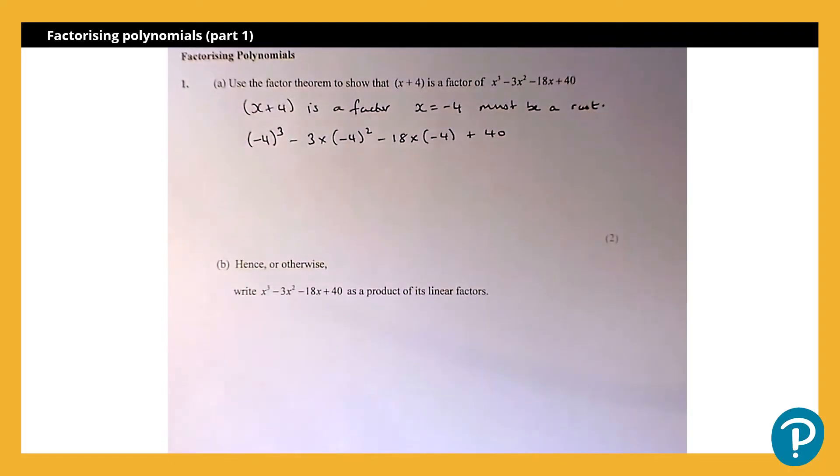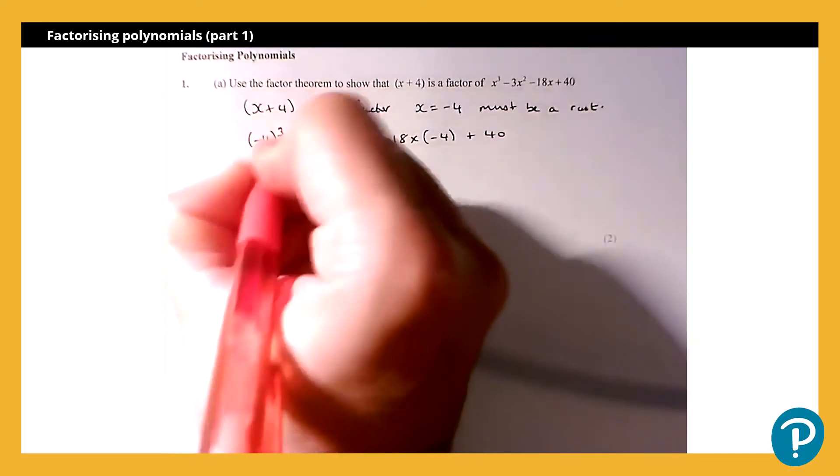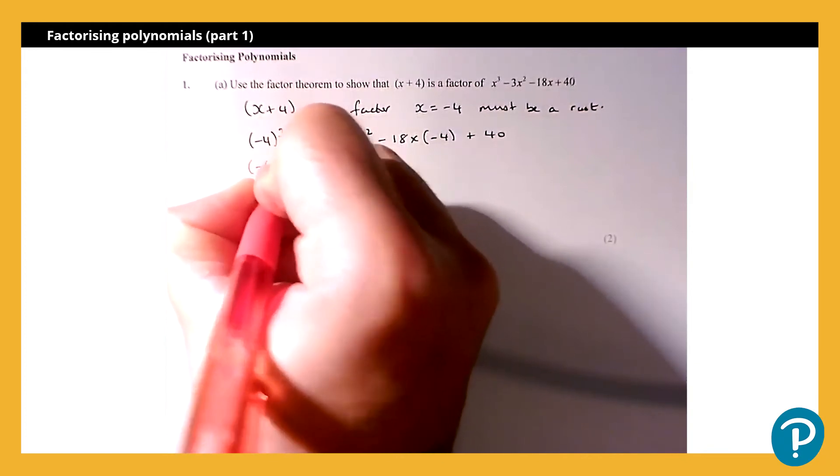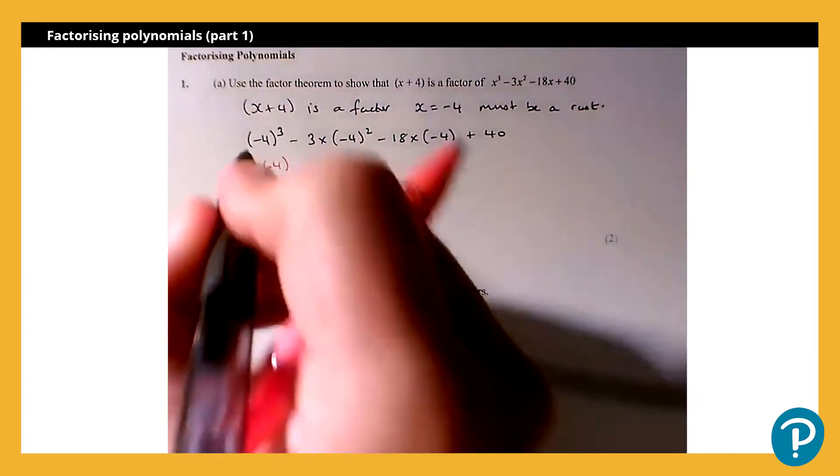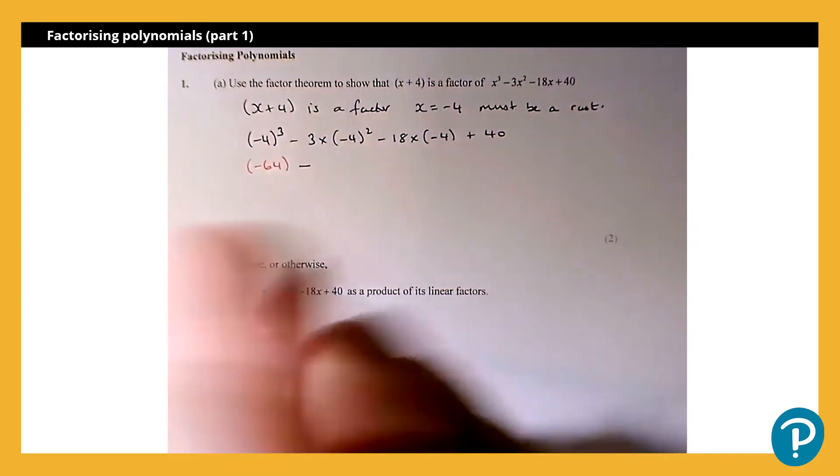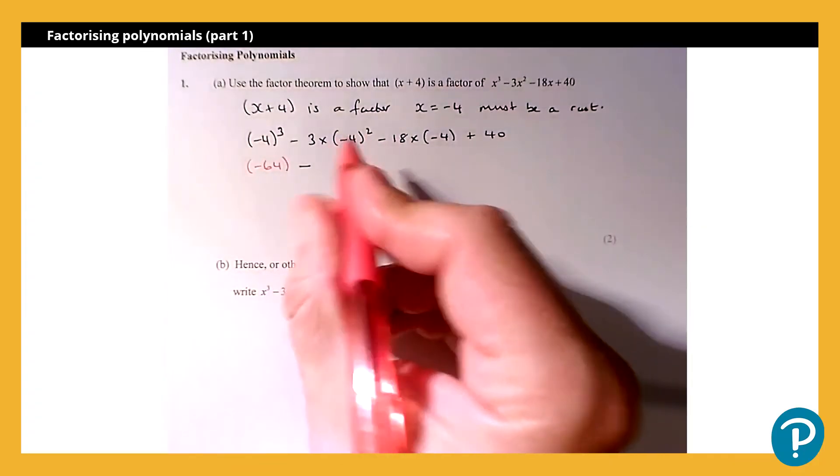Working out each bit in turn, (-4)³ is -64. So subtract, (-4)² is 16, multiplied by 3 is 48.